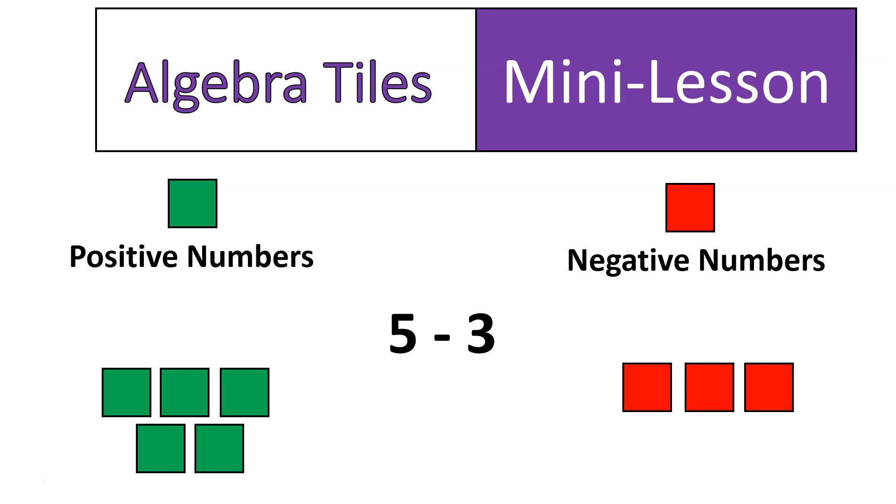And then I start to cancel them out. In other words, I say one negative and one positive, that equals zero. One negative, one positive, that equals zero. One negative, one positive, that equals zero. So three of the numbers actually cancel each other out, and I'm left with two positive numbers. In other words, five minus three is two. Again, you already knew five minus three was two, but this is a visual way of showing that.